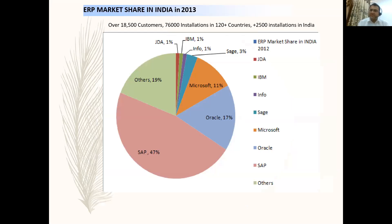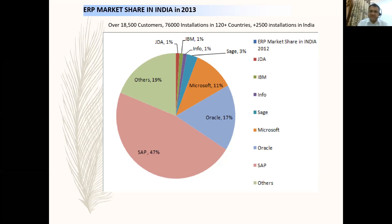There are other softwares too — Oracle is a leader in the banking industry, so you will rarely find SAP being used as banking software in India; it is mostly Oracle Financials in banking sectors. Within India there are 2,500+ SAP installations, and globally there are 76,000 installations of SAP in 120+ countries.